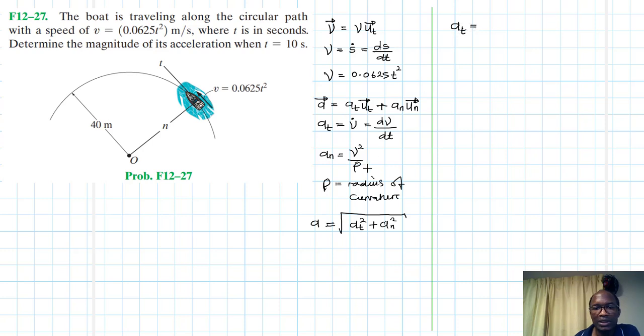So at, which is the acceleration tangential to the curve. If we were to find the first derivative of that, that gives us 2 by 0.0625 t. And this is going to be equal to 0.125 t. That's meters per second squared. So we found at.